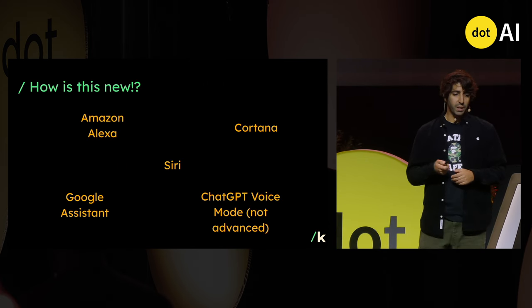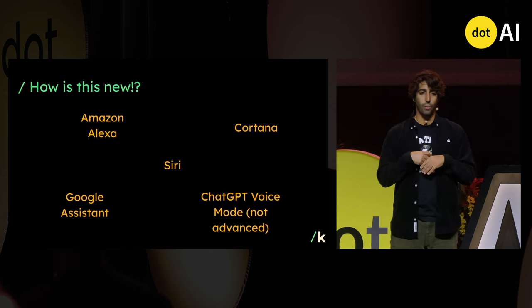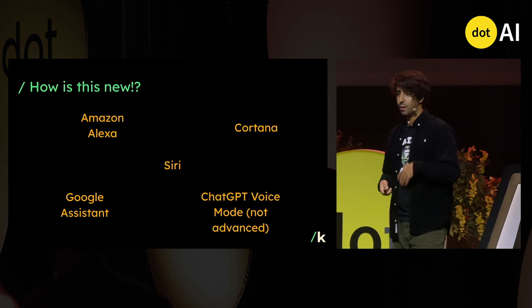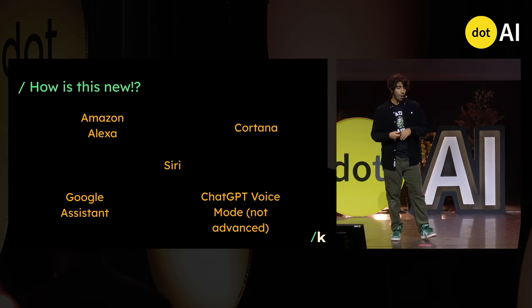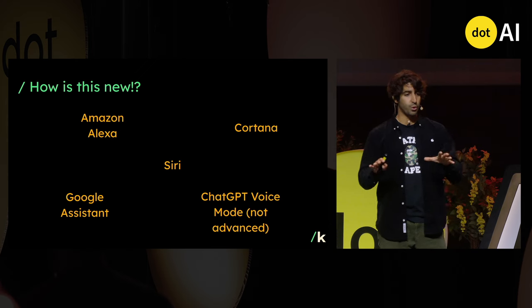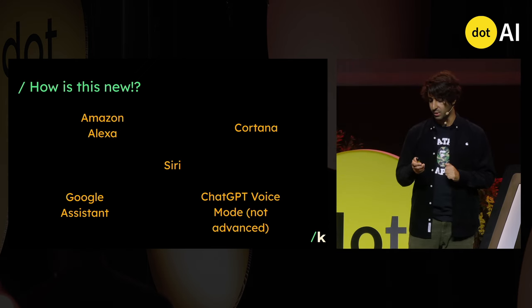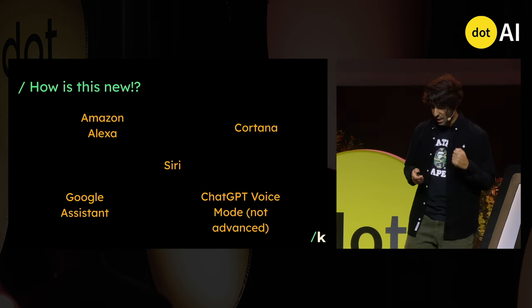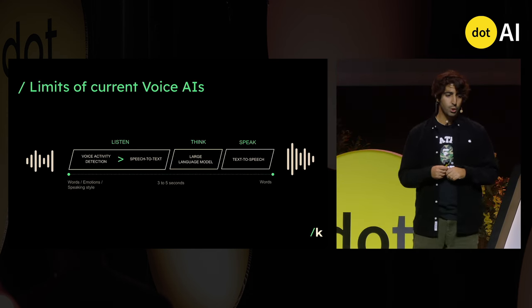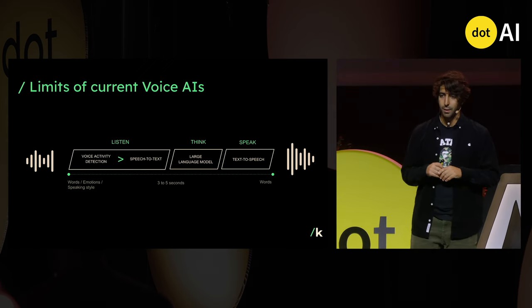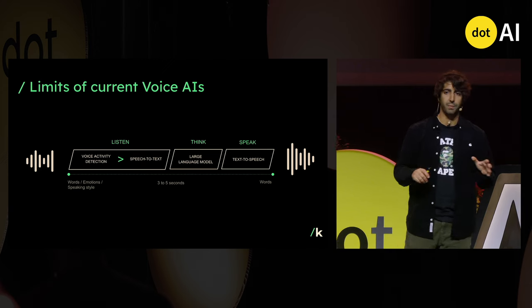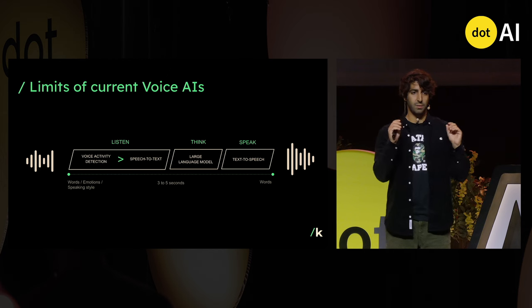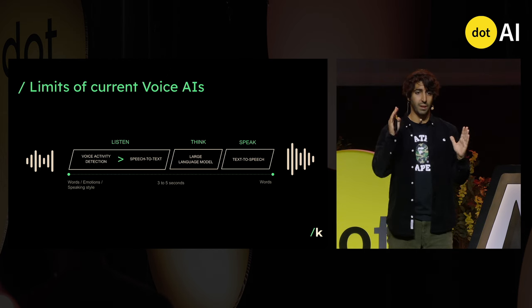The main question we got when we started working on this is: how is this new? Voice AI has been around for more than a decade, whether it's Amazon Alexa, Siri, Google Assistant, or even the ChatGPT voice mode before the recently released voice mode, which I will talk about later. To understand their limitations, let's take a look at how they work. If I ask a voice AI 'what is the square root of 25?', a voice activity detection algorithm detects that I've spoken a query and that I'm finished speaking — and now it's the LLM's turn.